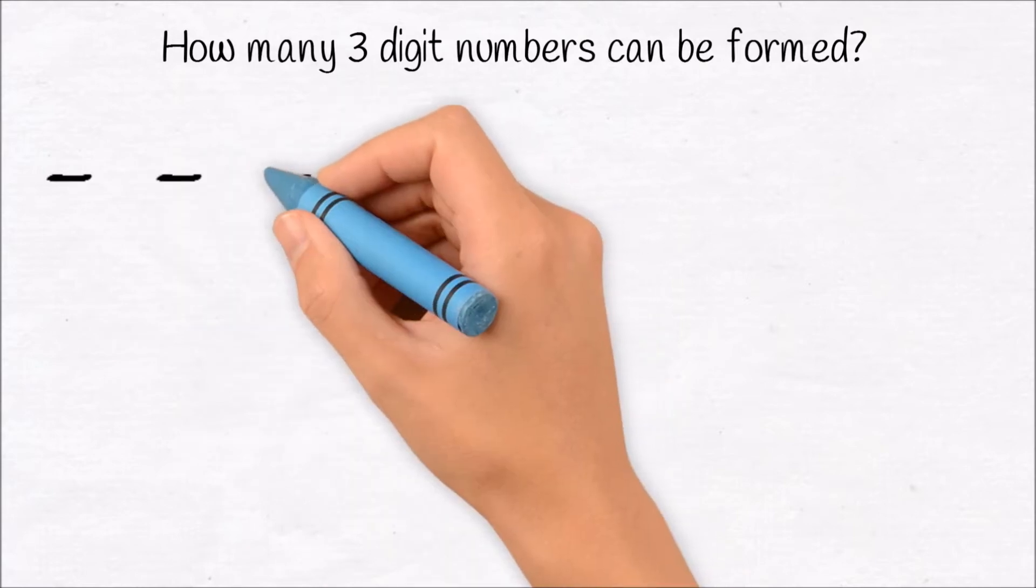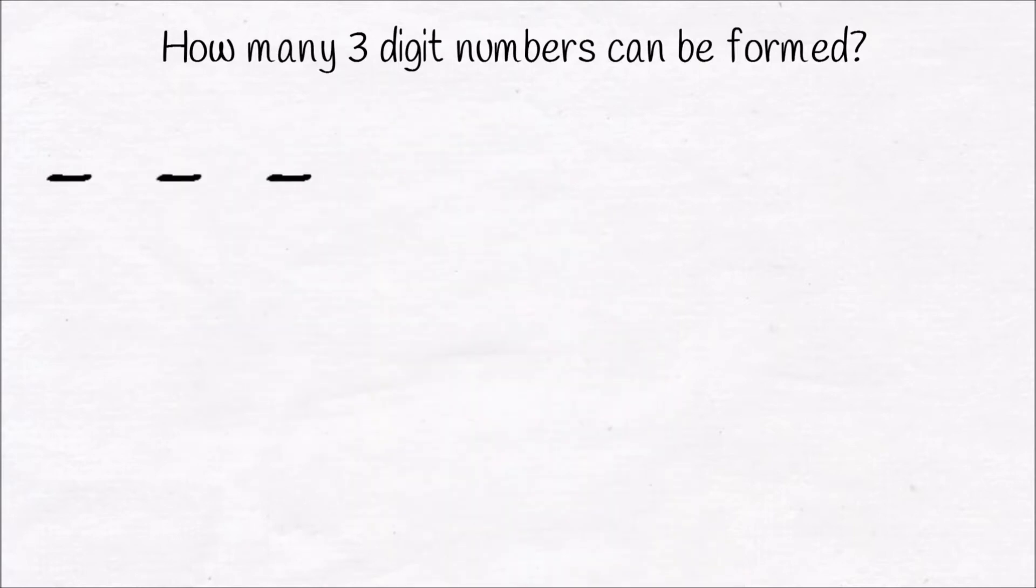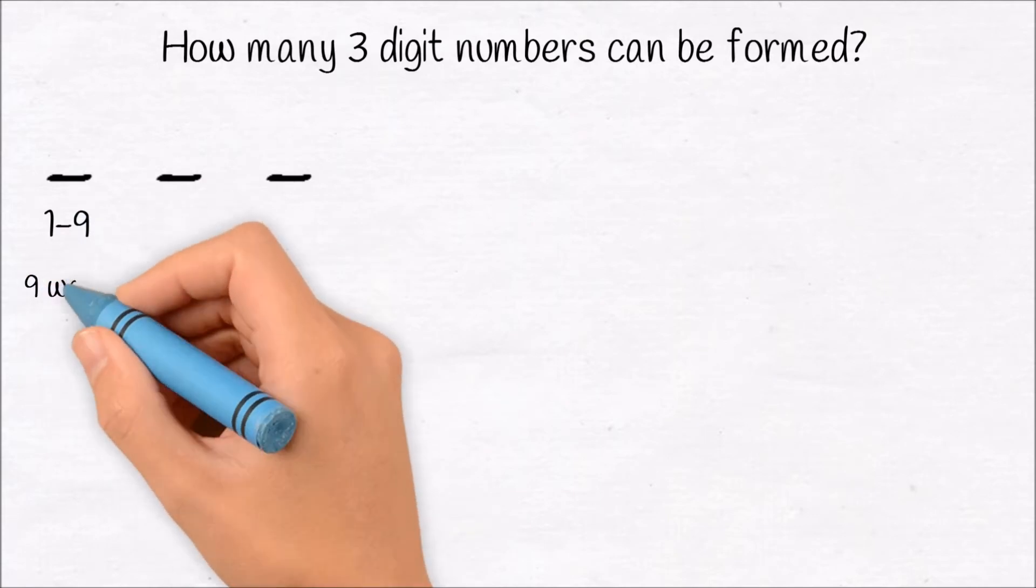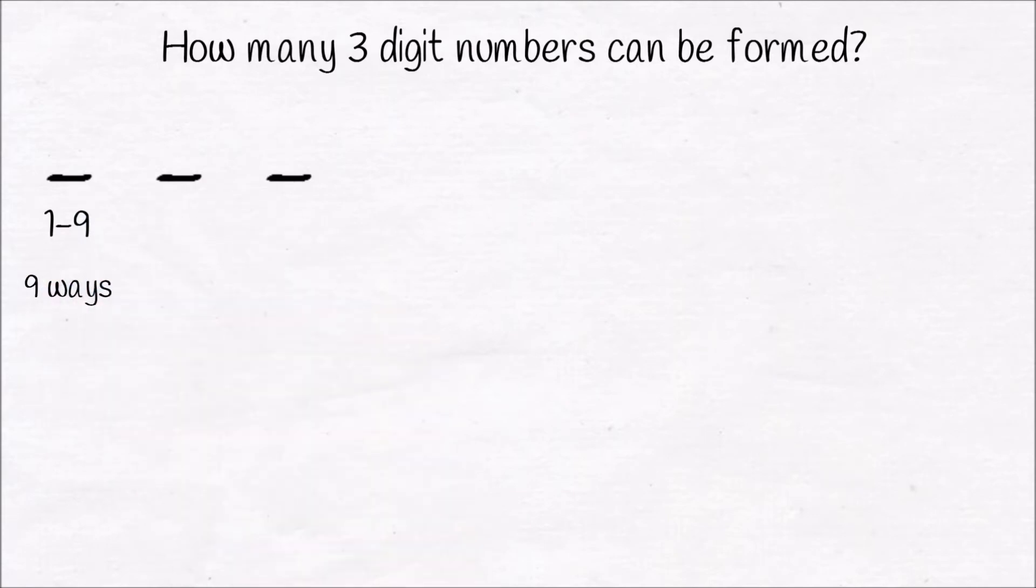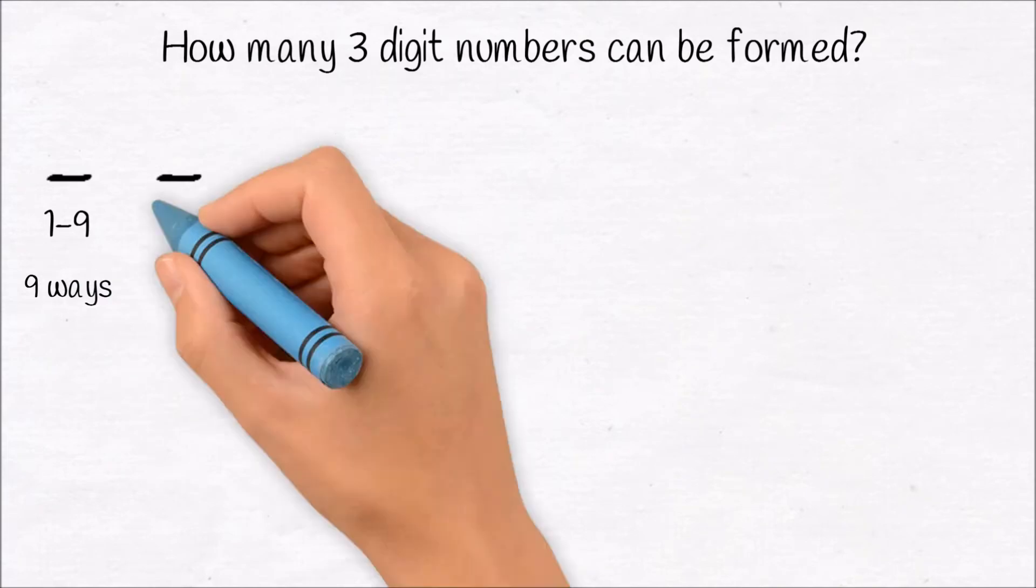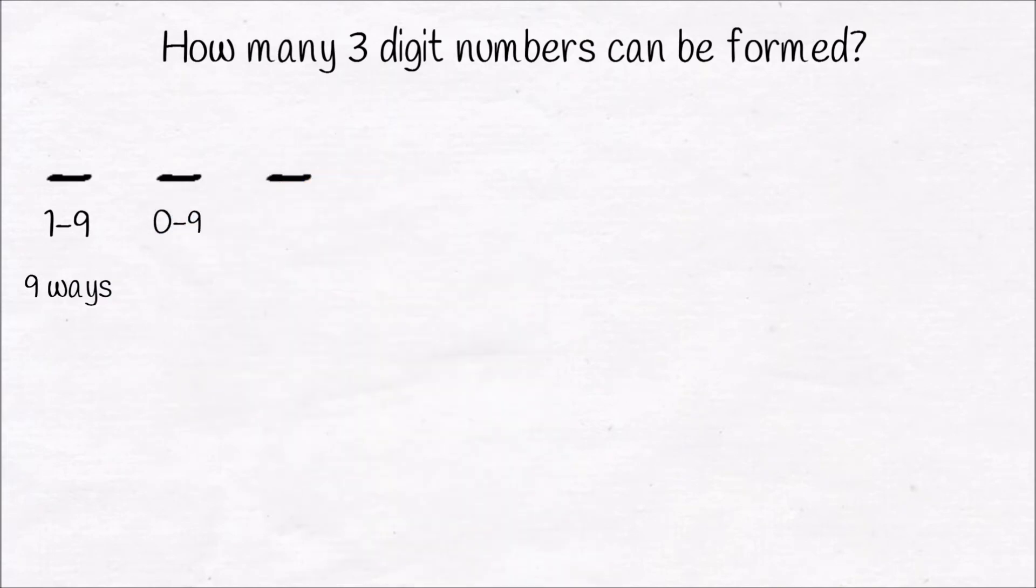But let me solve this question by using FPC. The 100th position can be filled by either 1, 2, 3 or 4, 5, 6 and so on. Note, the 100th position cannot be filled by 0. So there are 9 possibilities to fill the 100th position.